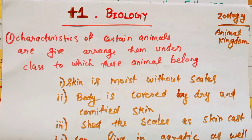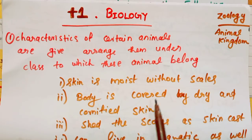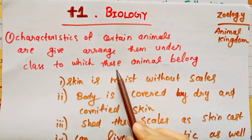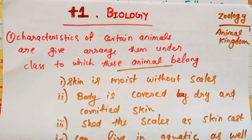This is the first question. Characteristics of certain animals are given. Arrange them under the class to which these animals belong. We have a question about animals.